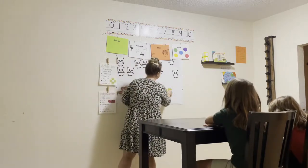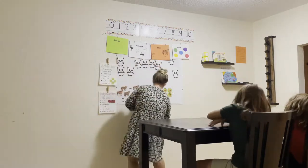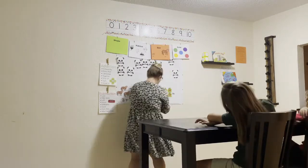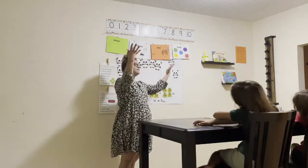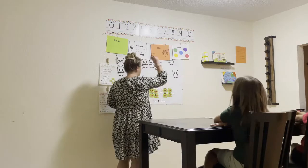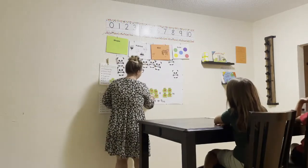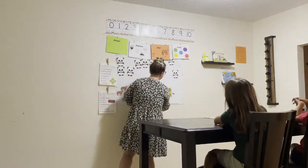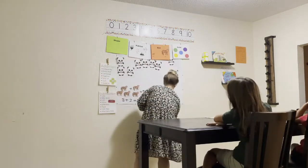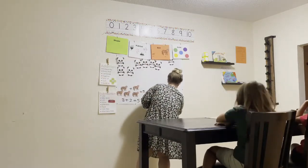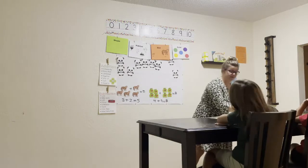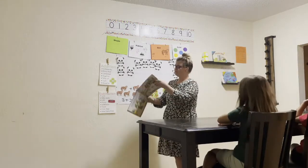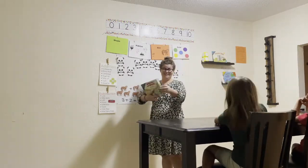And we're going to count the next group. Get ready. Go. One, two, three, four. Four more frogs. And so now we're going to count them all together. Get ready. Go. One, two, three, four, five, six, seven, eight. There are eight frogs in total. That is a lot of frogs. And I bet they made a lot of noise. Just like that.